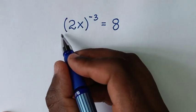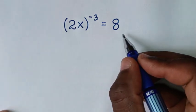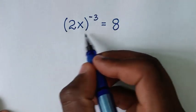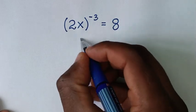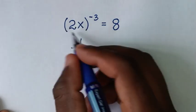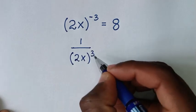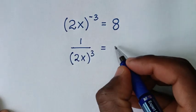To find the value of x from this equation, the power of negative 3 in this exponent is the same as 1 over (2x)^3, which is equal to 8.